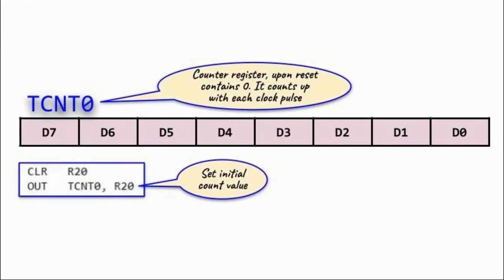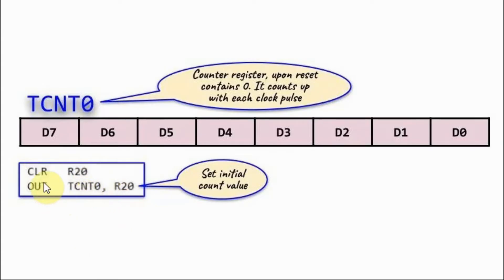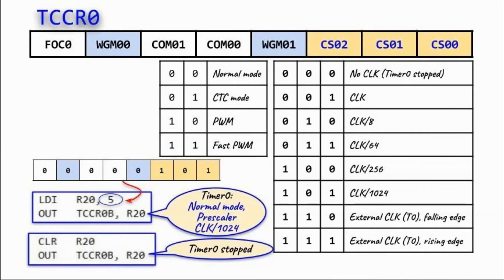Now let's see how to program the Timer 0 registers. The timer counter register is an 8-bit counter that counts from 0 to 255 and then repeats. We can store an initial value into this register using the OUT instruction — for example, clearing R20 to 0 and copying it into TCNT. The timer counter control register byte determines the mode of operation and the clock source for the timer.